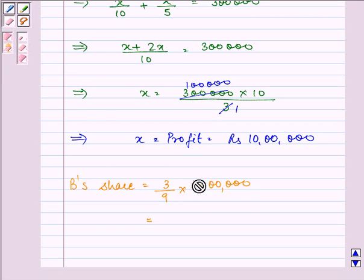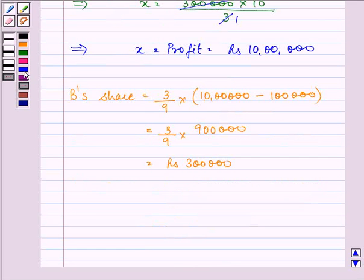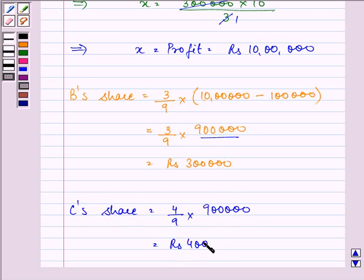It is not 10 lakh. It is 10 lakh minus 10% of this amount, that is given as salary to A, that is coming out to be 1 lakh. So it is 3 by 9 into 9 lakh, that is equal to rupees 3 lakh. And C's share will be 4 by 9 of the remaining profit, that is rupees 4 lakh.